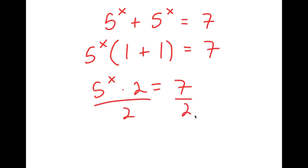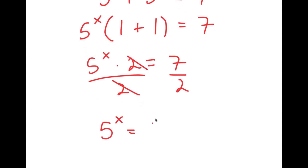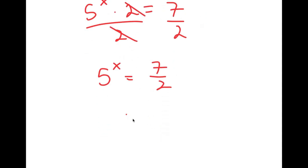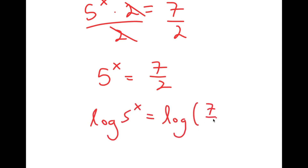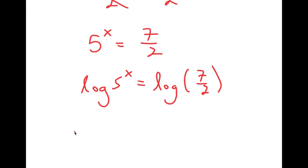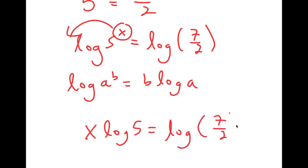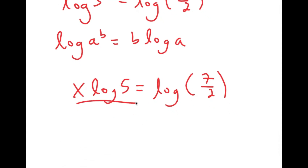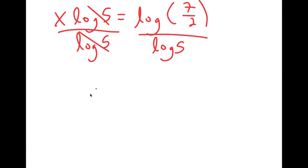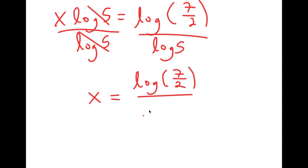Now I'm going to divide both sides by 2, so these two cancel out and I get 5 to the power of x is equal to 7 over 2. Now I'm going to take the log on both sides, so I get log of 5 to the power of x is equal to log of 7 over 2. I can move x to the front, so I get x times log 5 is equal to log of 7 over 2. Now I want to isolate x, so I'm going to divide both sides by log 5. These cancel out and I get x is equal to log of 7 over 2, divided by log 5.